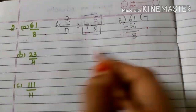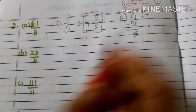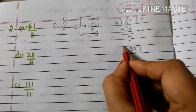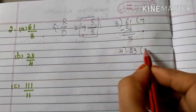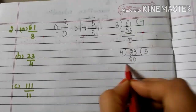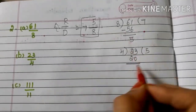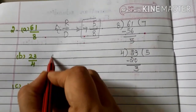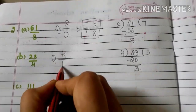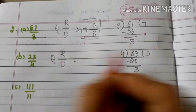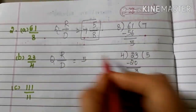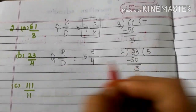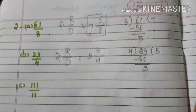B: 23/4. Now divide 23 by 4. 4 fives are 20. 23 minus 20 is 3. Write the mixed fraction Q R/D. Quotient is 5, remainder is 3, divisor is 4. So the mixed fraction is 5 and 3/4.